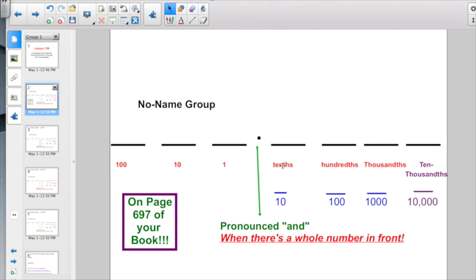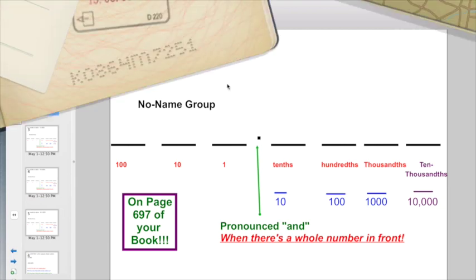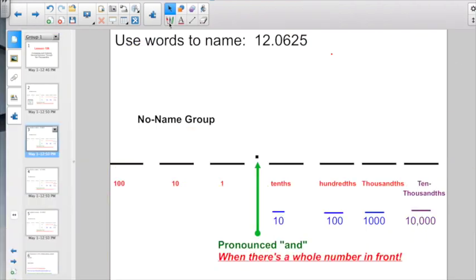And then we have the tenths place, the hundredths place, the thousandths place, and one new place value, the ten-thousandths place now. So let's jump right into it.